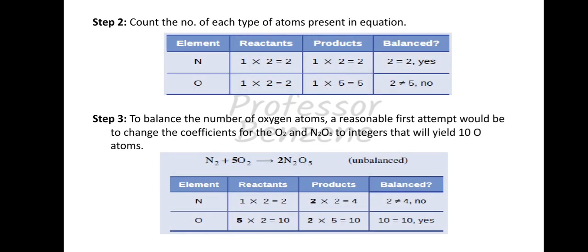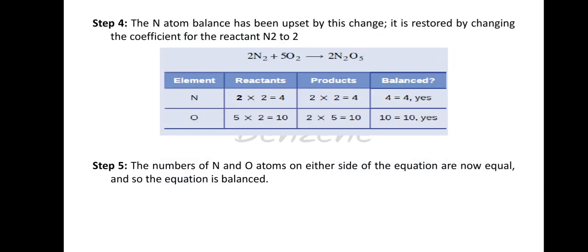Now we count which elements are on both sides. Nitrogen: 2 on both sides. Oxygen: left side has 2, right side has 5 — not balanced. To balance oxygen, we multiply N2O5 by 2 (giving 10 oxygen on the right) and O2 by 5 (giving 10 oxygen on the left). Then nitrogen must also be balanced by placing a coefficient of 2 in front of N2. The balanced equation is 2N2 + 5O2 → 2N2O5.